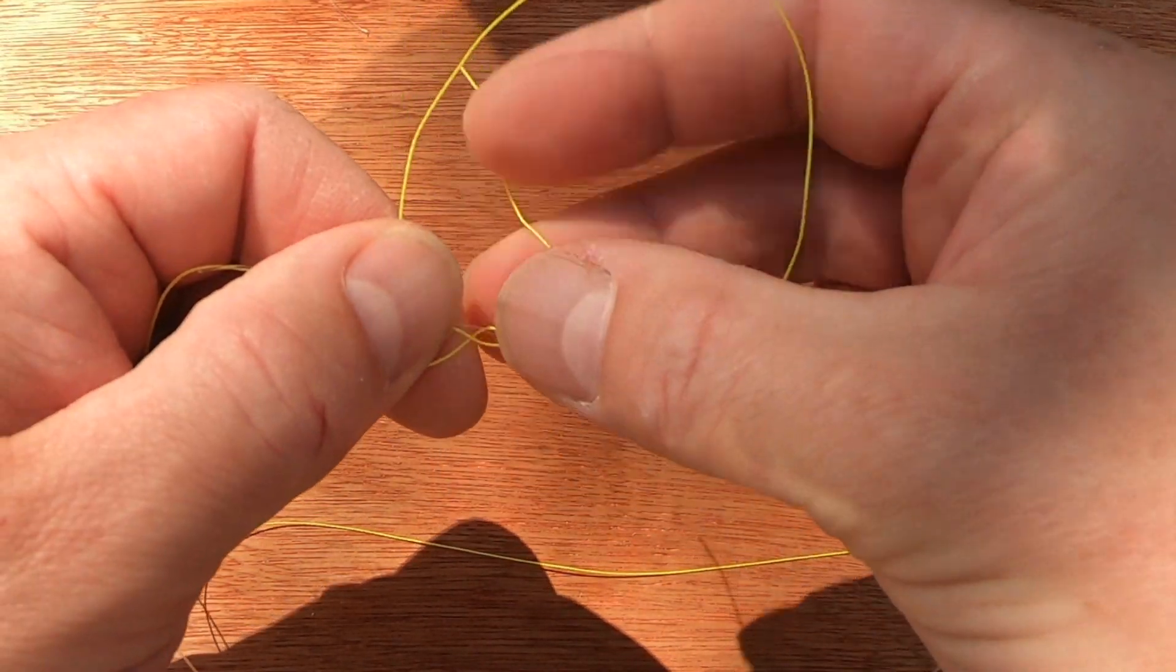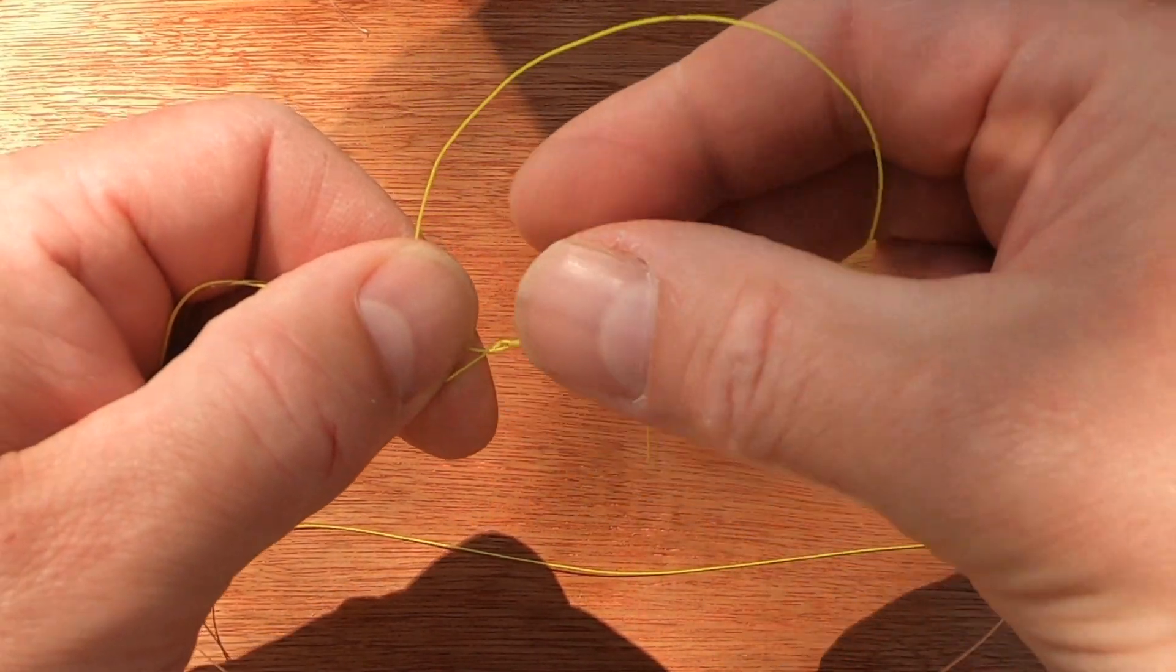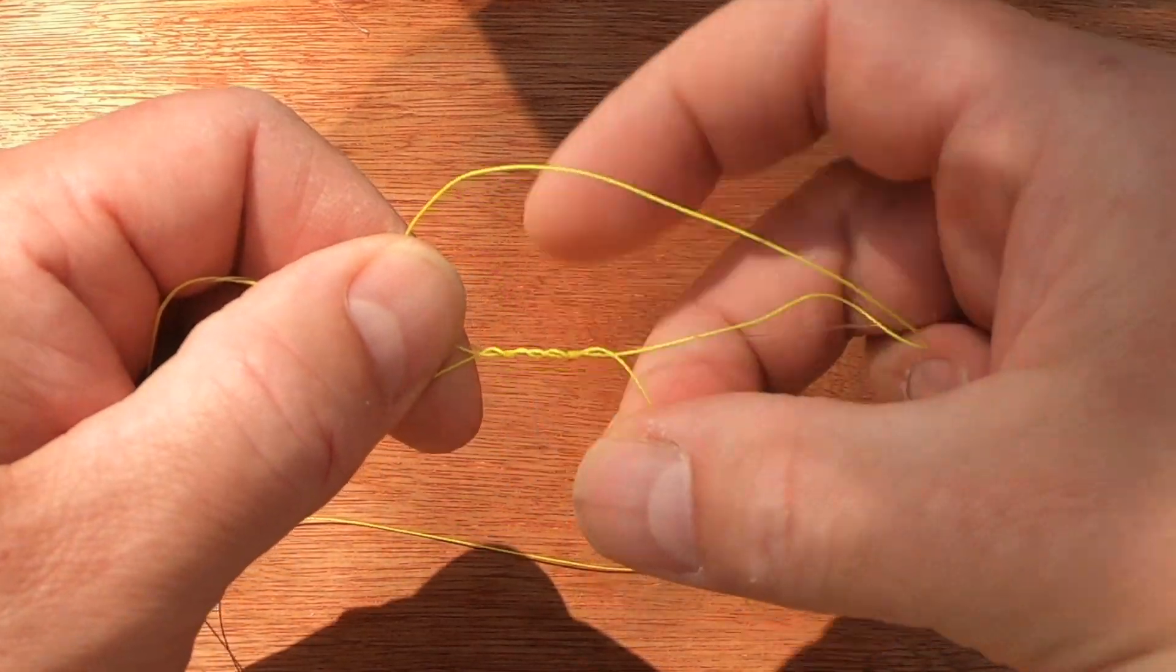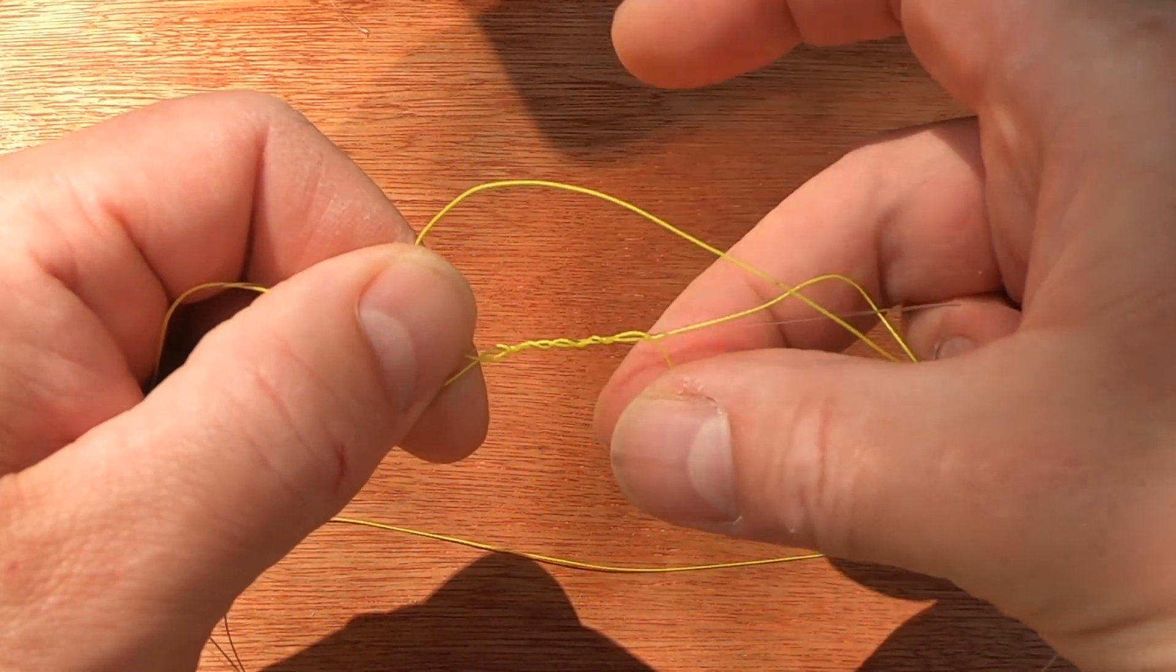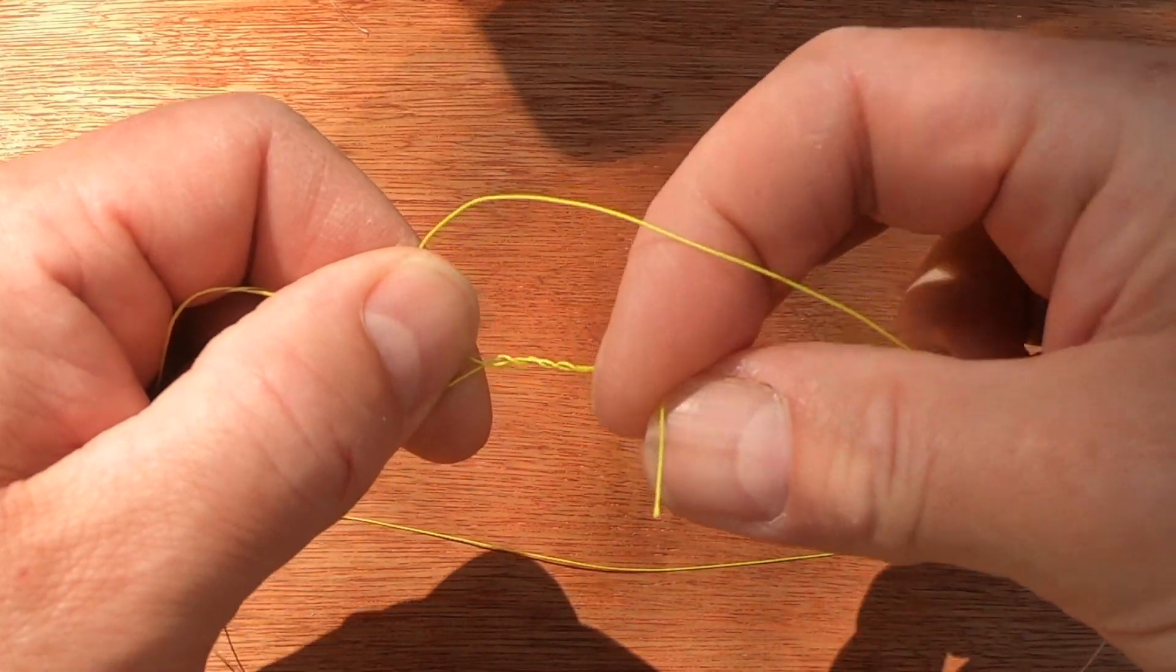So I form a loop with the braid that is parallel with the fluorocarbon in this case. Now here's the clever bit, because the braid is thinner and slips easier, so instead of five turns I put about eight turns in it.